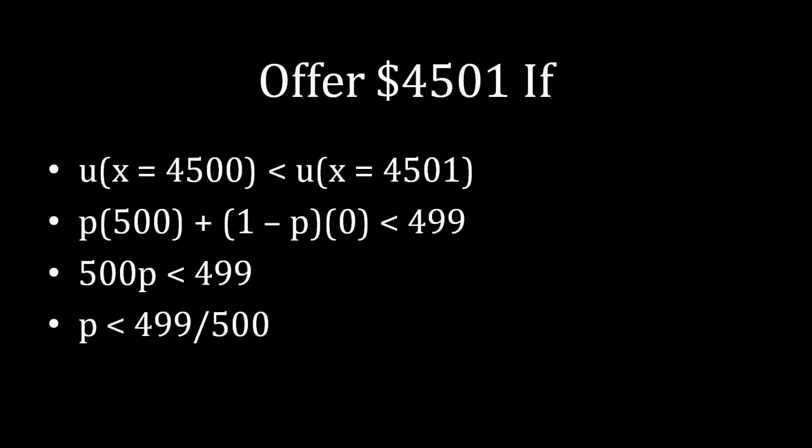And unfortunately, we're not quite done here yet. We've looked at circumstances where Albert's payoff is greater for offering one than the other. But there is a very specific circumstance where Albert is now indifferent between offering $4,500 and $4,501. So now we've just changed all of those inequalities to equalities. And we see at the end, at that last bullet point, when p is exactly equal to $499 over $500, Albert is indifferent between offering $4,500 and offering $4,501. So he, in fact, could randomize between those two things as well.